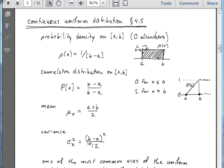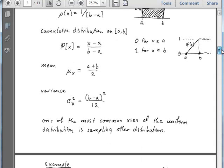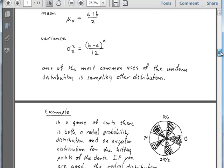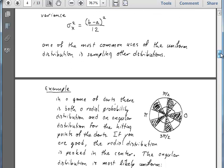The variance is going to have something to do with the width of that interval. So it's going to involve B minus A. And specifically, it's B minus A squared over 12. So that is the uniform distribution. It is very, very, very simple to work with. And one of the most common things that we use it for is actually sampling other distributions.